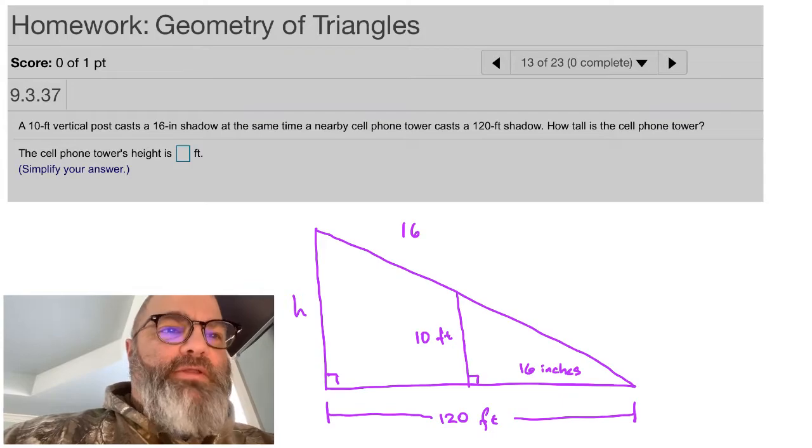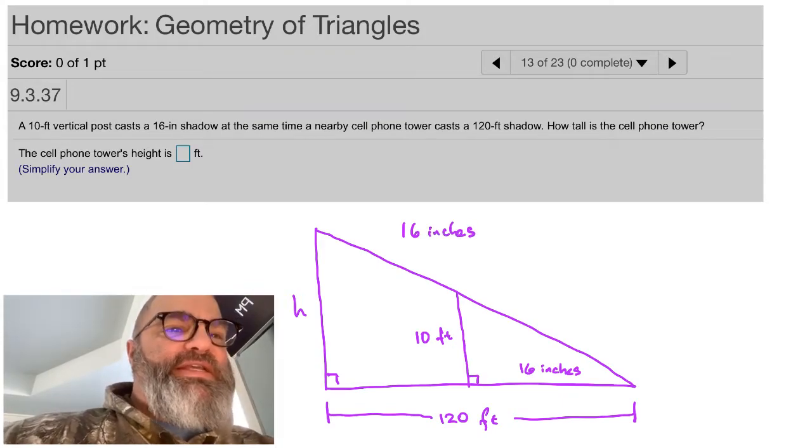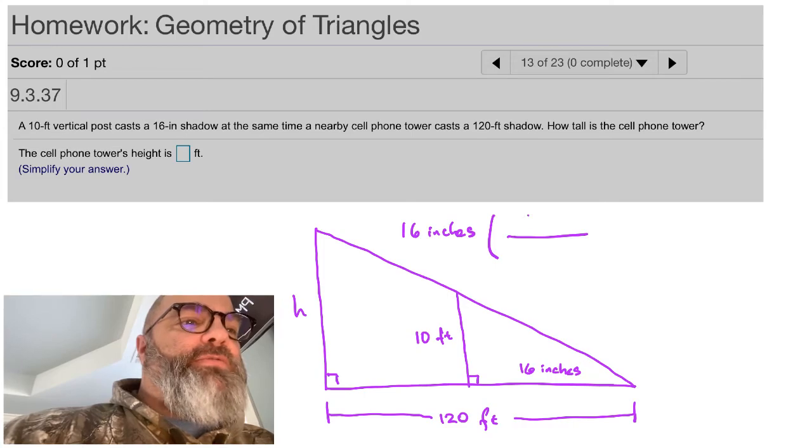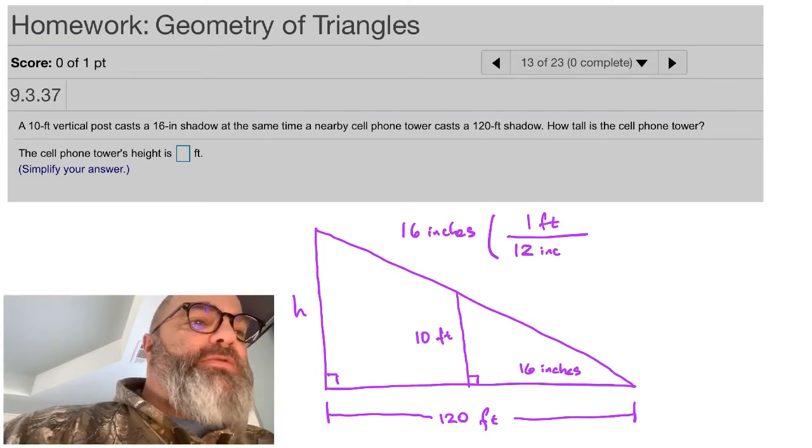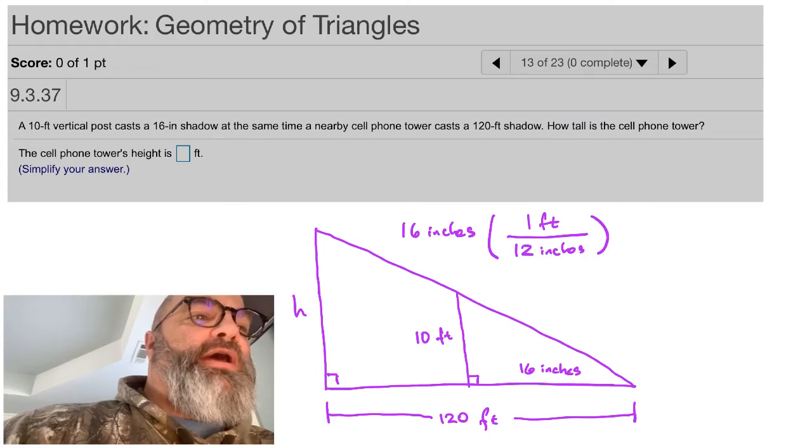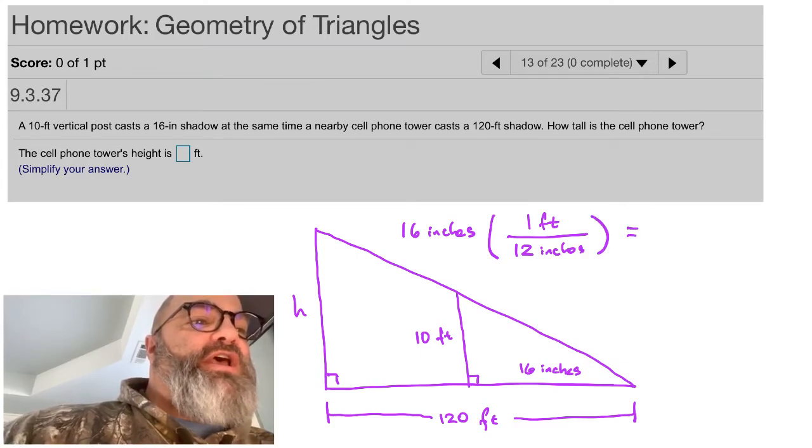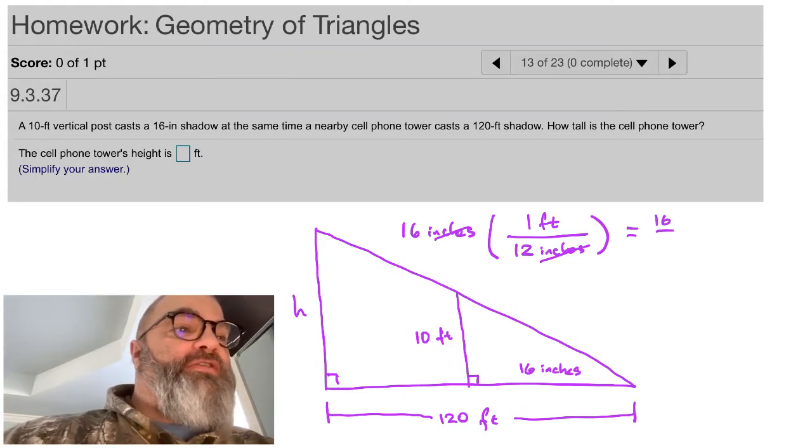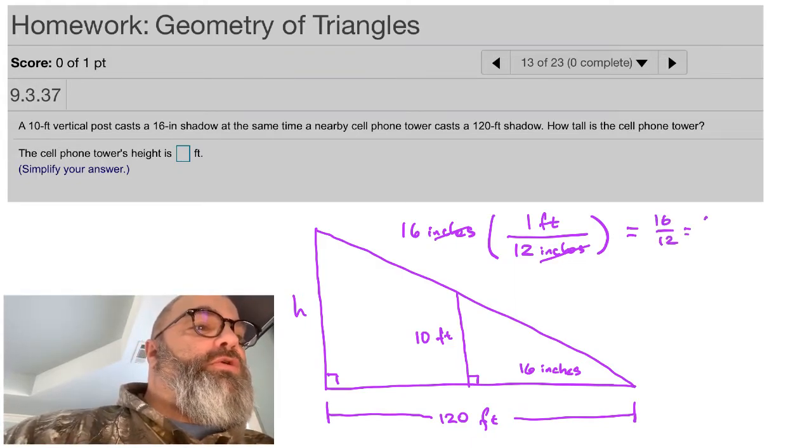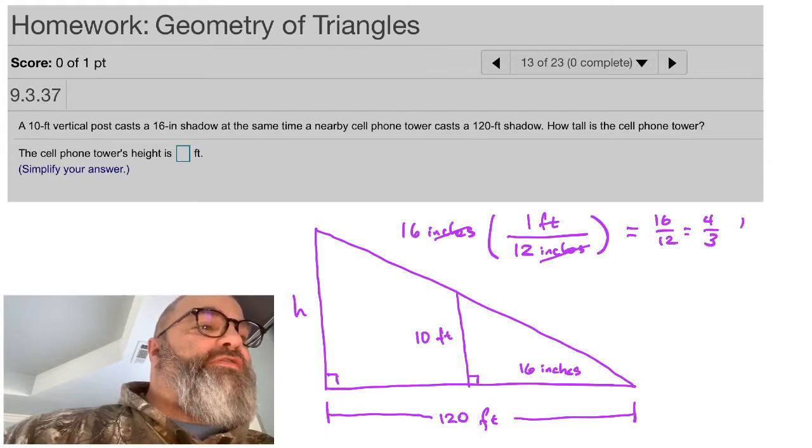Now let's do our conversion. So we've got 16 inches, and when we know we've got 1 foot is equal to 12 inches, we just multiply by 1 foot over 12 inches. Our units of inches are going to cancel out, which is going to give us a value of 16 over 12, or really 4 thirds feet.